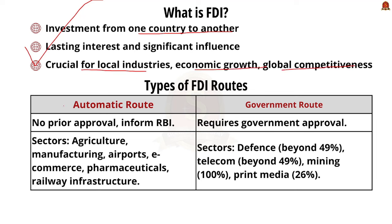FDI is very crucial for strengthening local industry, boosting economic growth, and improving global competitiveness. In simple terms, FDI gives the investor direct control over the company in the native country. The types of FDI routes: First is the Automatic Route — no prior approval is needed; it only requires informing the RBI after the investment is made, not before. Sectors where 100% FDI is allowed under automatic route include agriculture, manufacturing, airports, e-commerce, pharmaceuticals, and railway infrastructure.